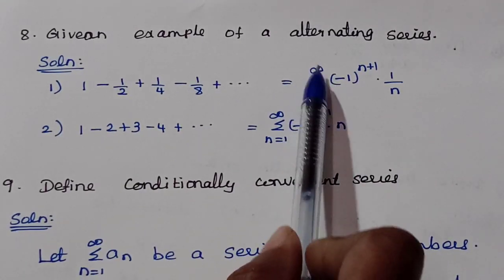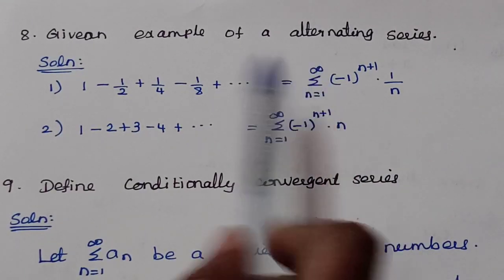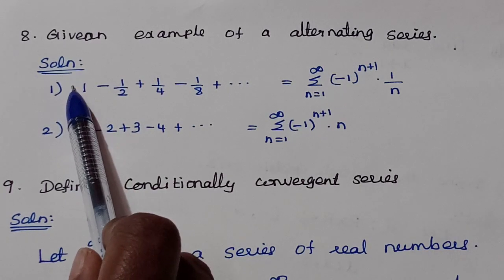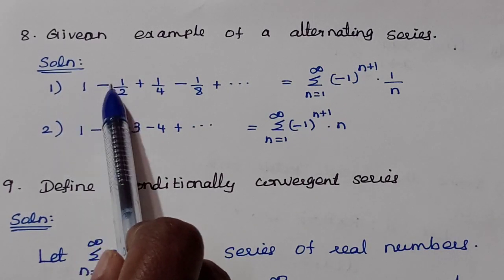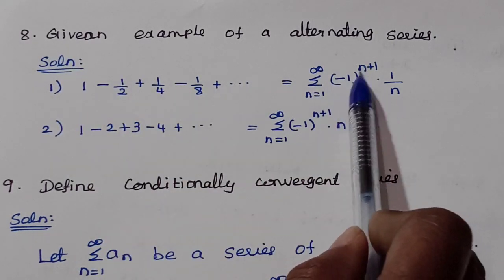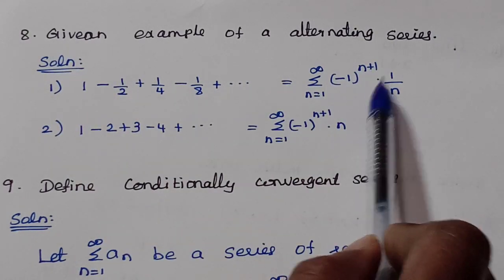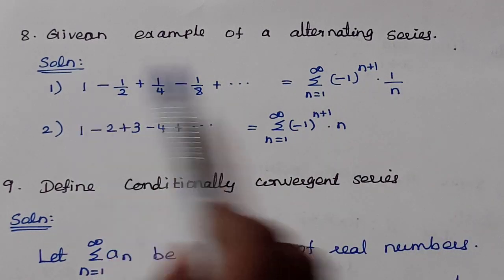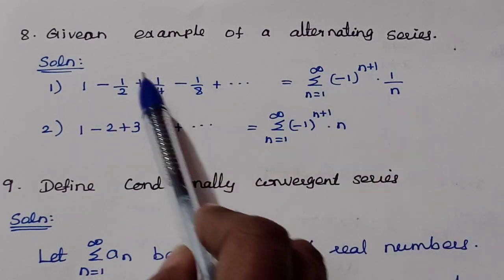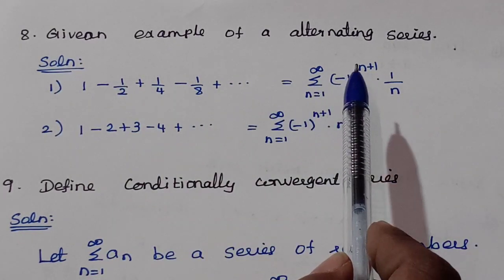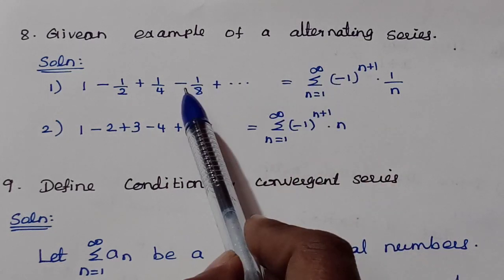In summation notation: Σ (n=1 to ∞) (−1)^(n+1) · (1/n), giving 1 − 1/2 + 1/3 − 1/4 + … This is a standard alternating series.